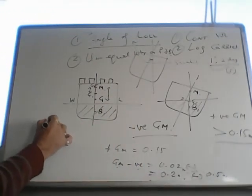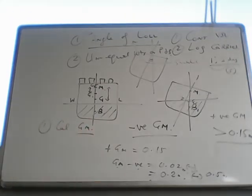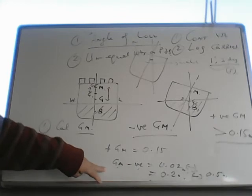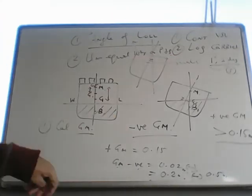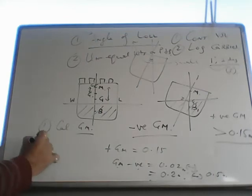There are 2 or 3 methods. First method is you calculate the GM by loading computer. If it is positive, it could be unequal weights. If it is negative, it could be angle of loll.